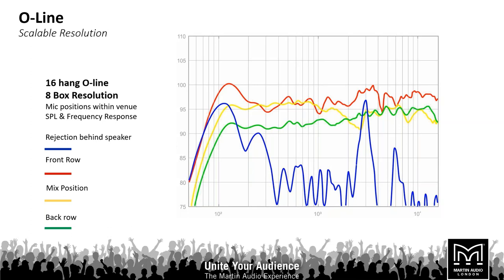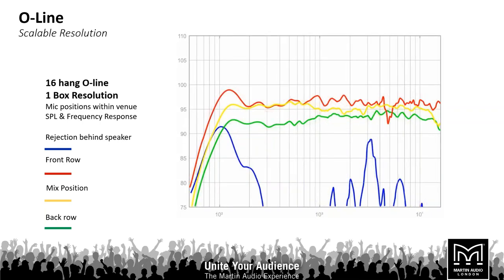There's quite a variation in SPL and frequency response throughout the area. Looking at the blue trace — the rejection behind the loudspeaker — it is not unprecedentedly quiet, and there's a big spike right in the middle of the vocal band. If we up the resolution to one-box resolution, where every cabinet in the array has its own DSP, the audience area responses converge on one another, giving a quite consistent response right the way through, and the rejection behind has now dropped away really nicely.